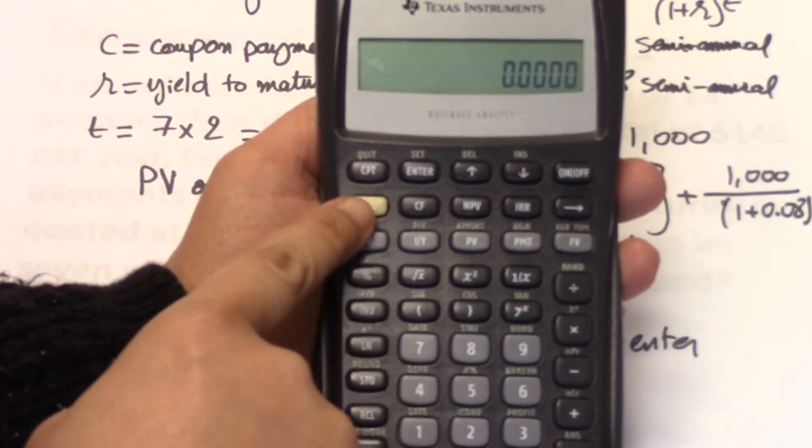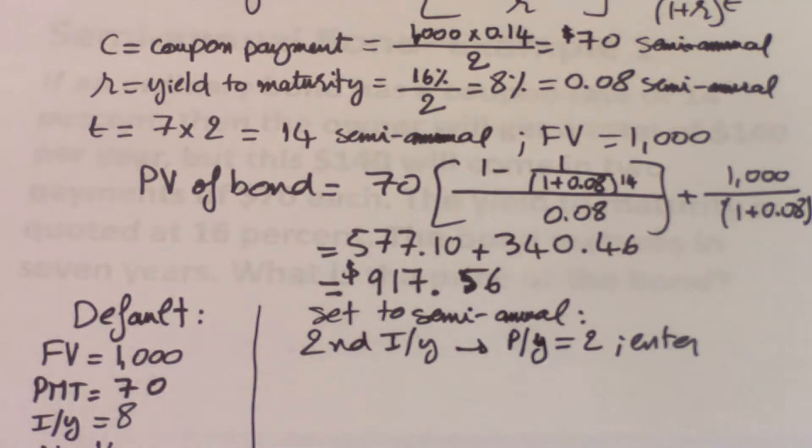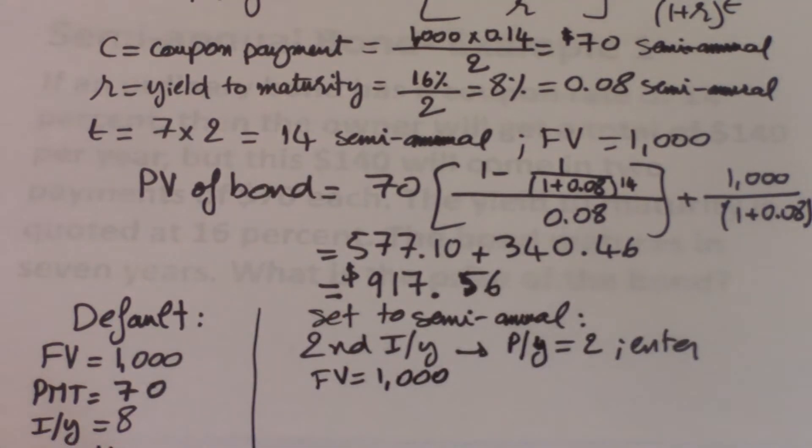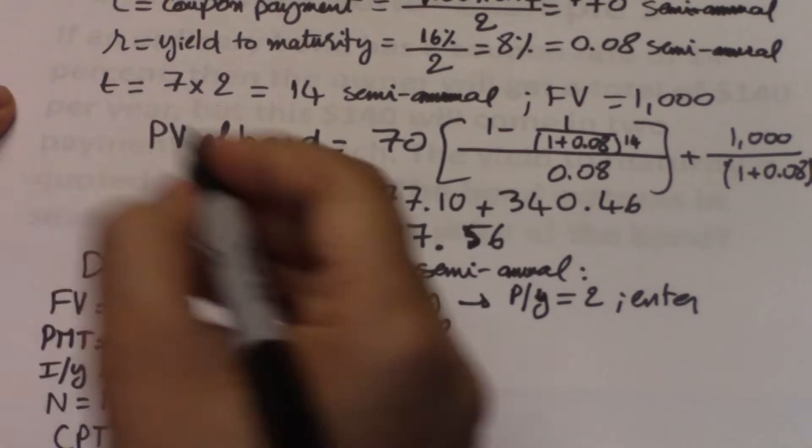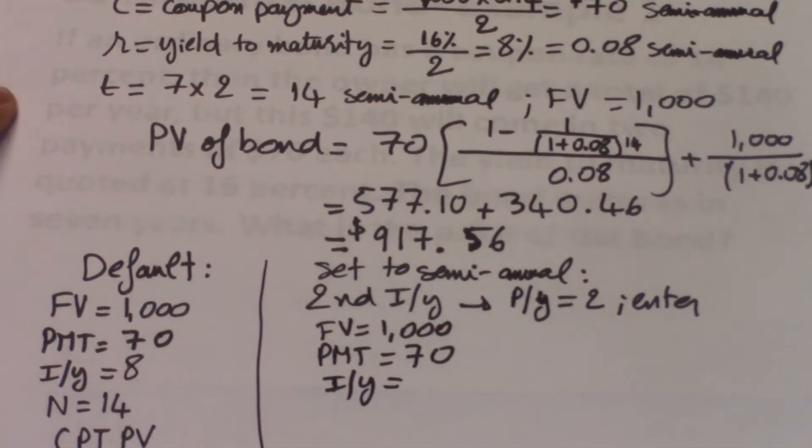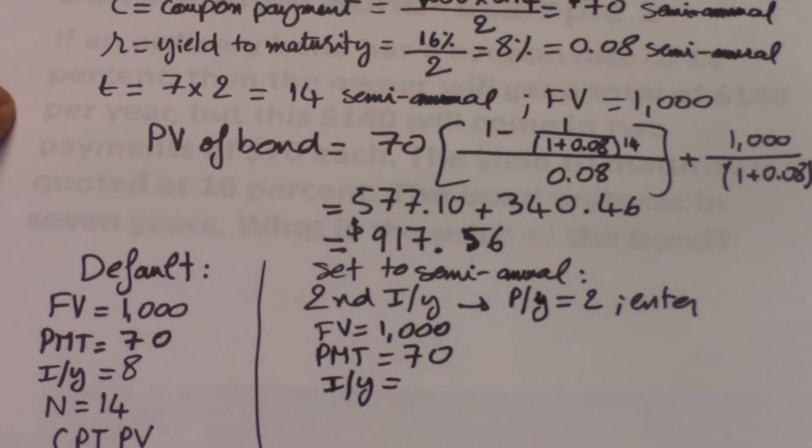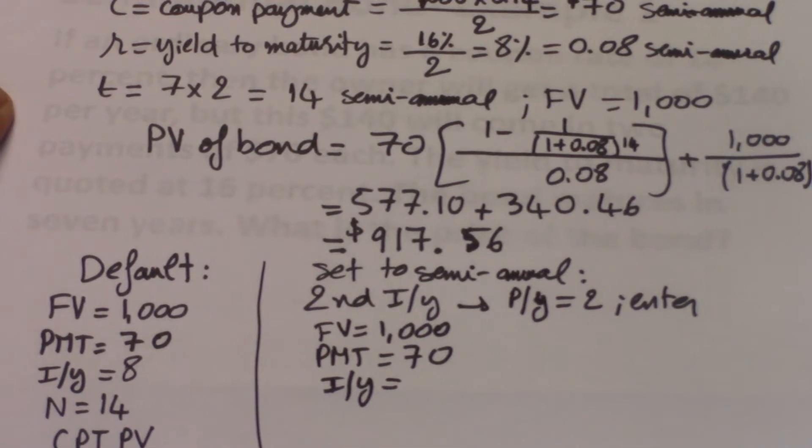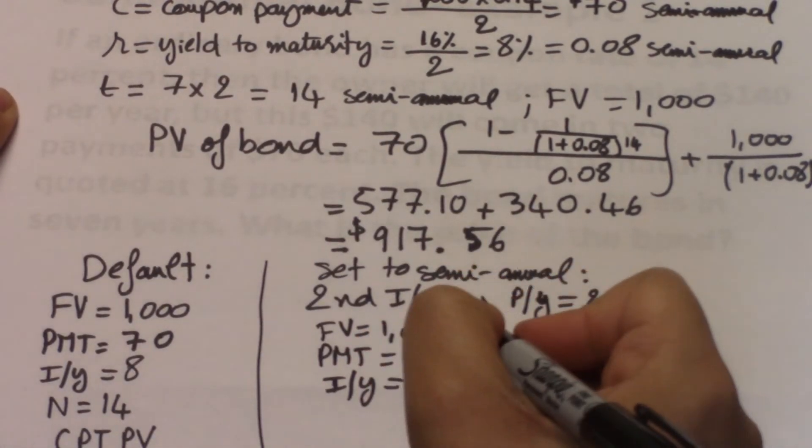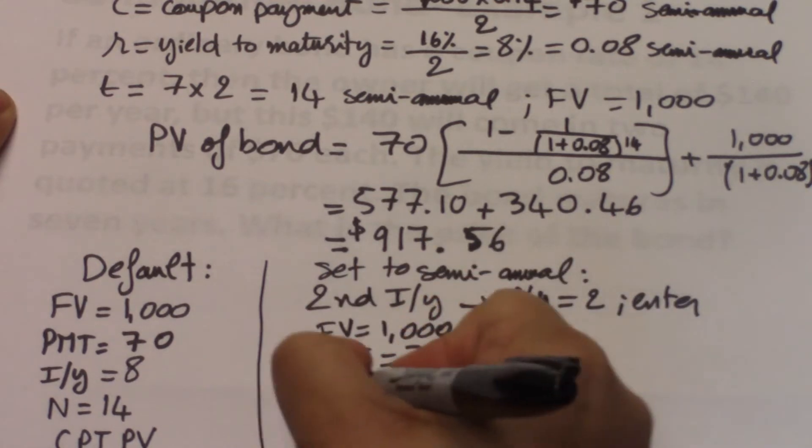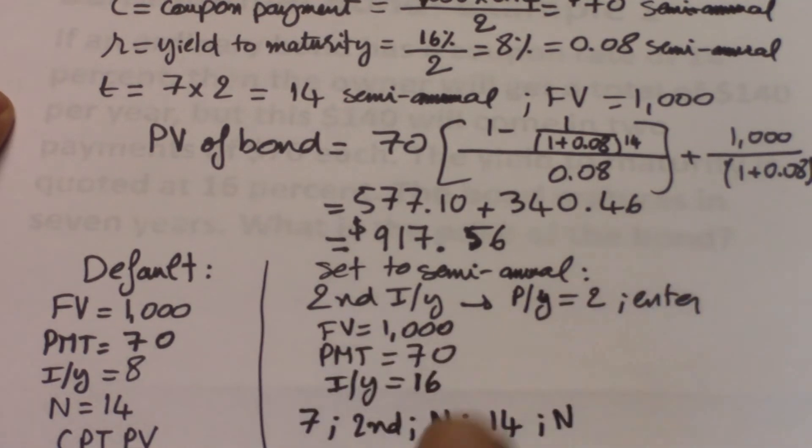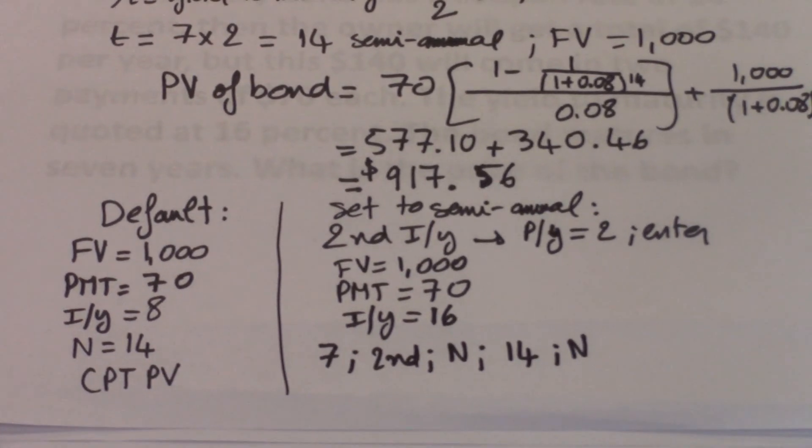Again, before you input anything, you always clear your work. So second FV, second CE/C. And this is what you would input. So the future value remains the same. So it's still $1,000. The payment, this is what you're getting every period is $70. So the PMT is 70. I over Y, this is the interest per year. And you input it as a yearly number because your calculator is already set to semi-annual. So it knows that this is what you are quoted. And so you keep it as an annual number. So 16. And then to input N, you basically do seven years and then second N. The calculator is going to double it. And then you hit N again and then compute for PV. And here I'm going to show you how to do this on the calculator.